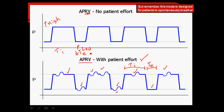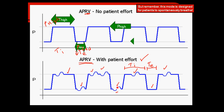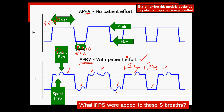We differentiate APRV by the settings on the ventilator. We have specific P high, P low, T high, and T low. All modern ventilators would allow the patient to spontaneously breathe at any time during the inspiratory or the expiratory phase. So the key elements are T high, T low, P high, P low, and allowing this spontaneous breathing.